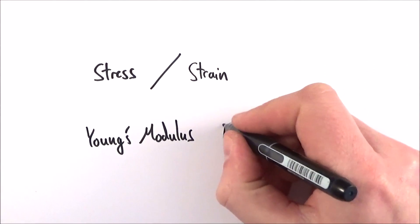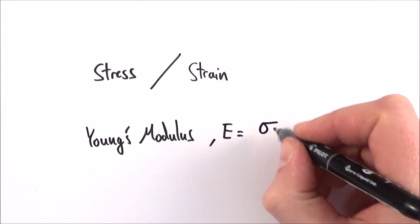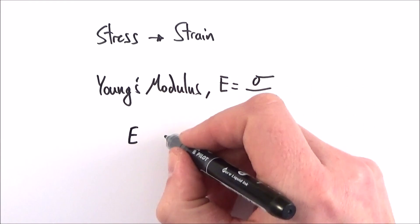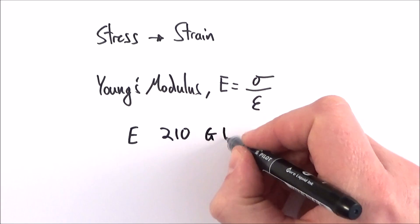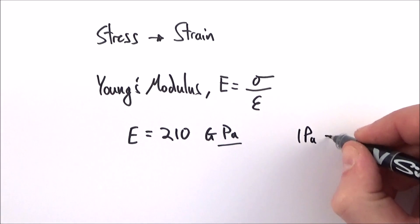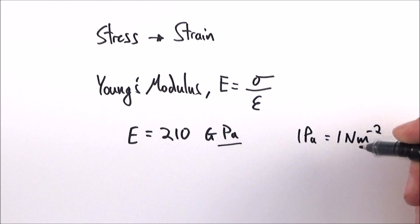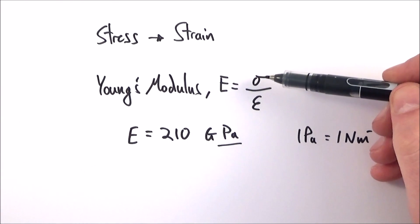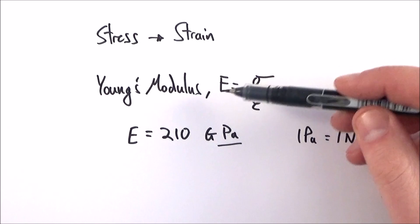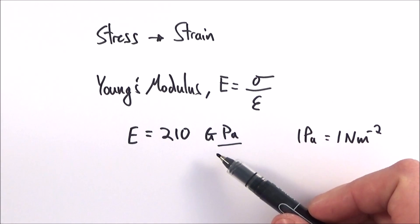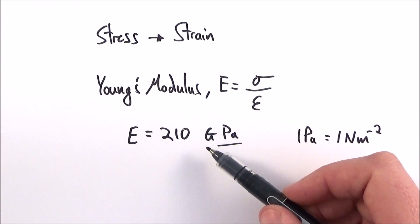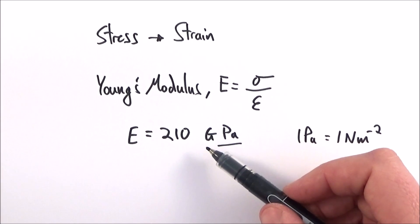Young's modulus has the symbol E, and it's equal to the ratio of the stress applied to the strain. If we look at mild steel, for example, the value of E is about 210 gigapascals. The reason it's pascals is because one pascal, which is a unit of pressure, is the same as one newton per square metre, which we can also measure stress in. So we can measure in newtons per square metre or pascals. And because strain is a unitless quantity, the units for stress are also the units for Young's modulus. It takes a lot of force to get metal to deform, so that's why we have giga here — about 210 gigapascals is a typical value for something like steel.